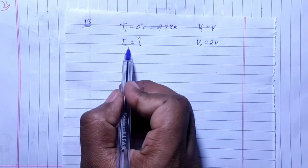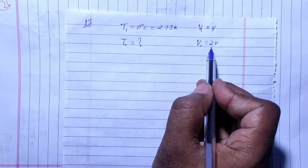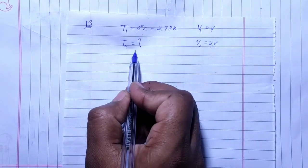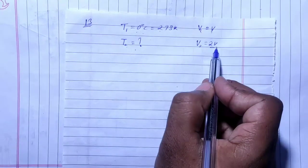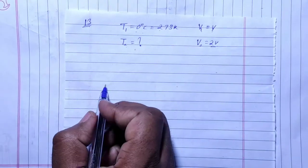The velocity is v1. When the velocity is double, then the temperature will be found. When the velocity is v, the temperature is 0 degree Celsius. When the velocity is 2v, then the temperature will be what we need to find.